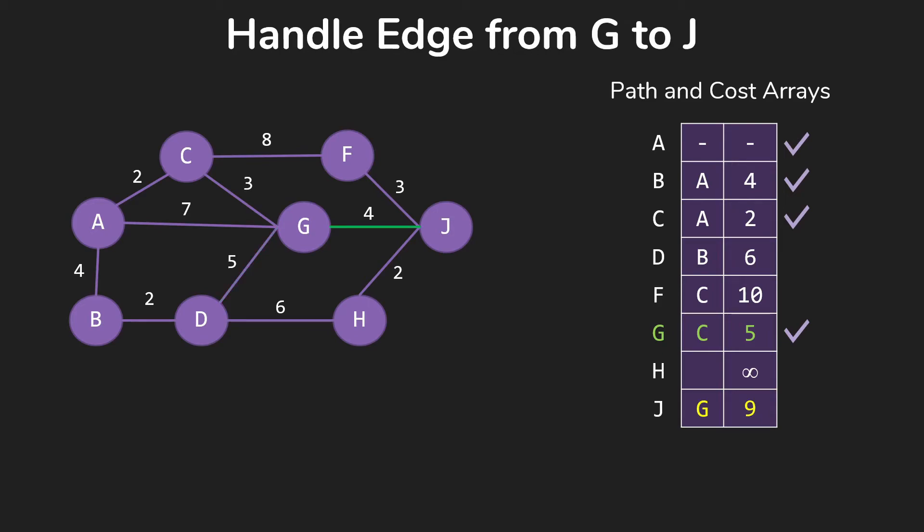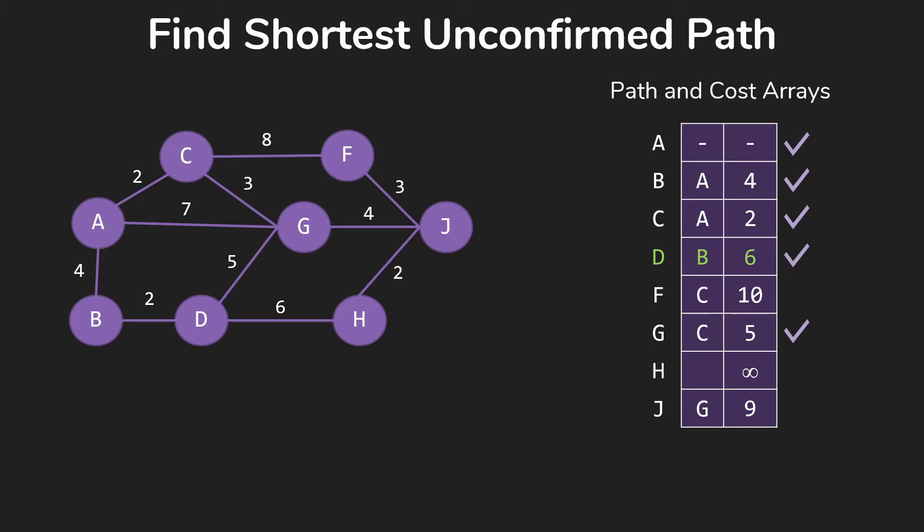So then finally, we handle the edge from G to J, and here we didn't have anything recorded, so we update the array to show that we can get to J from G for 9, the 5 to get to G plus 4 for this edge. We check our loop conditions. And the next path we're going to check is D from B for 6, since that's the smallest thing we have that we haven't confirmed yet.